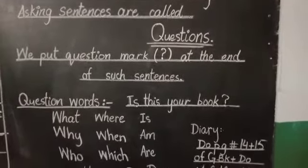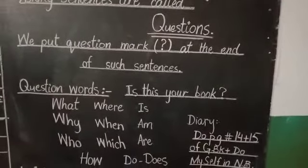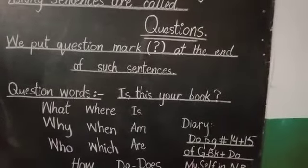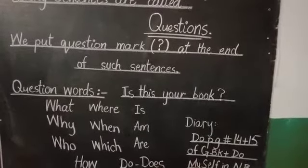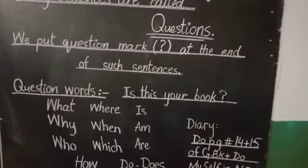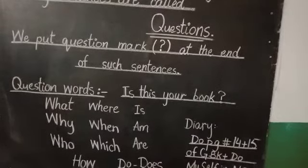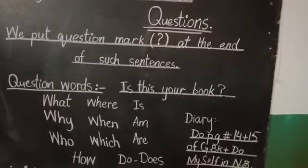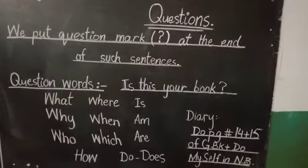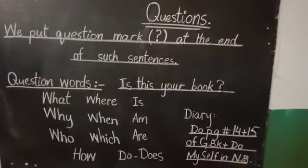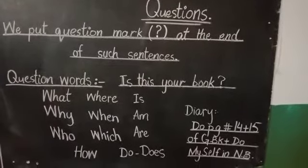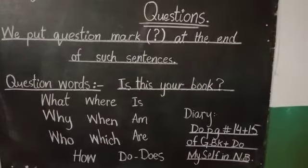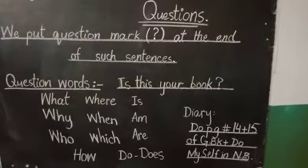Isse tarah se kuch words hote hain jo WH words hote hain — jo WH se start hote hain. Like: 'What is this?' — yeh kya hai? What means kya, why means kyun, who means kaun, where means kahan, when means kab, which means kaun sa, how means kaise, how many means kitne. If we put these words at the start of a statement, it becomes a question.